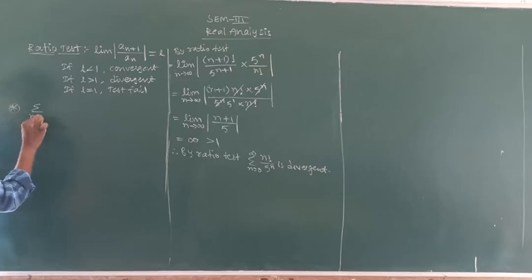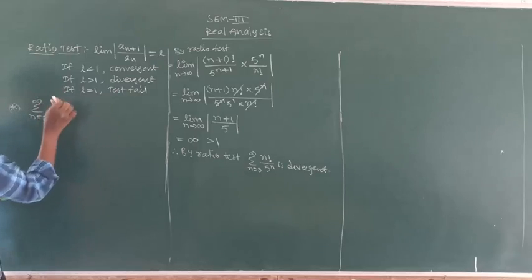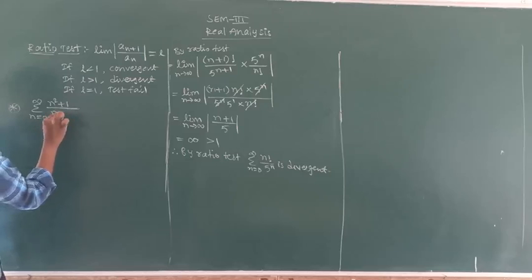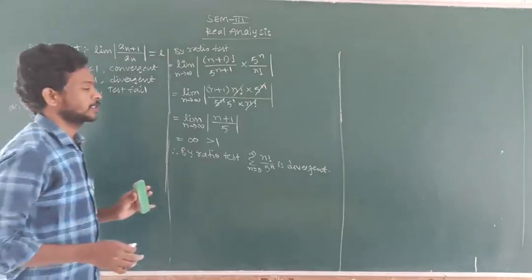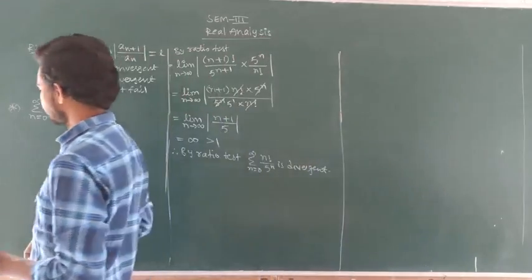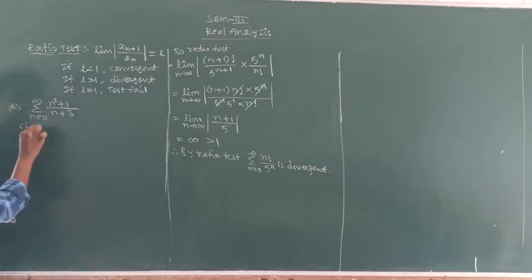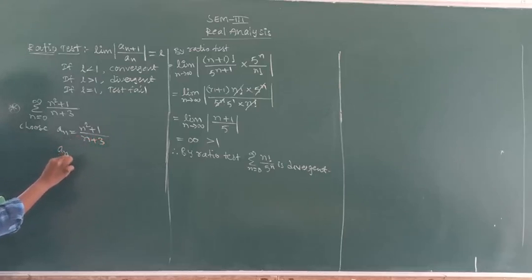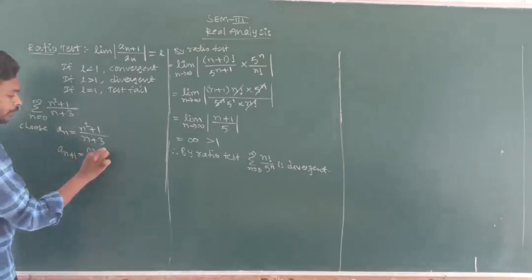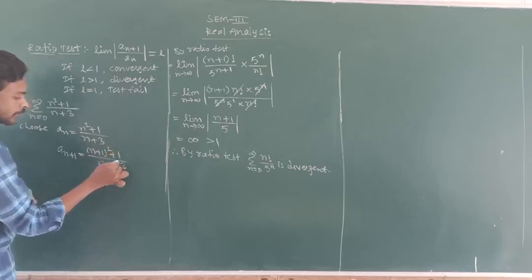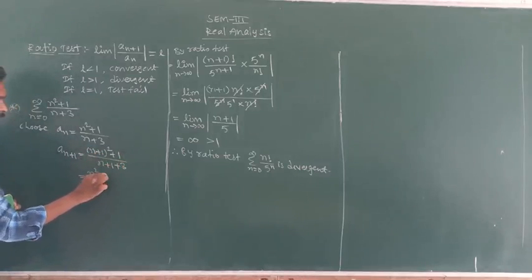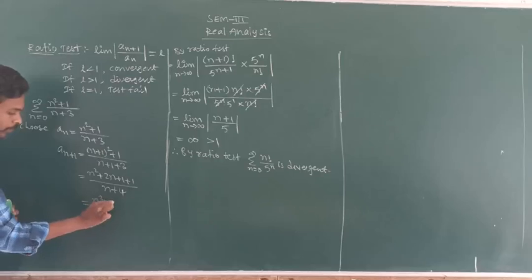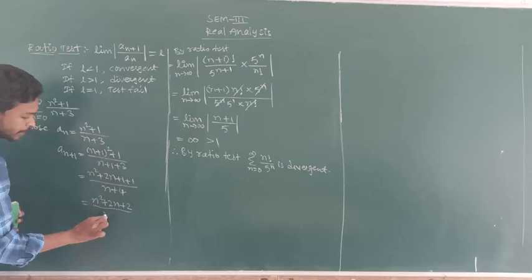Sum of n equals 0 to infinity of n squared plus 1 by n plus 3. Choose a_n equals n squared plus 1 by n plus 3. Now a_{n+1} becomes — substituting n plus 1 in place of n — n plus 1 squared plus 1 divided by n plus 1 plus 3, which equals n squared plus 2n plus 2 divided by n plus 4.